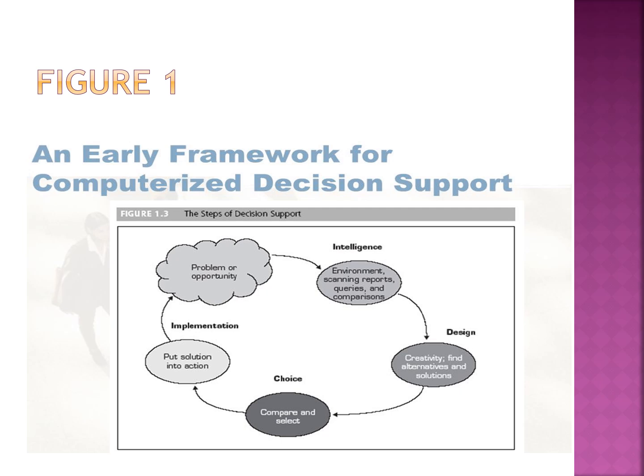In this diagram, first we have a problem definition phase. As part of this, engineers consider various environmental factors, study reports, and conduct a feasibility study to check whether it is feasible to design and implement the system. They also pass several queries to the customer, interacting with them to gather requirements, and compare with existing work to analyze limitations.